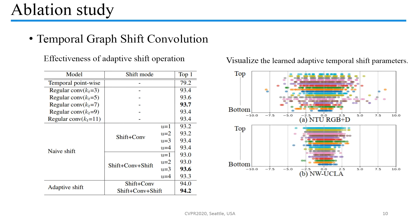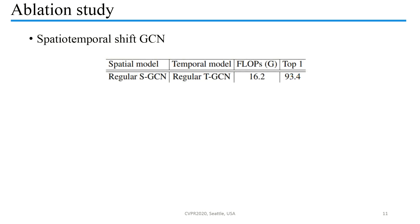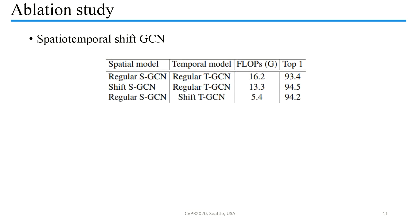The shift parameters trained on the NTU RGB+D dataset tend to be larger than those on the NW-UCLA dataset. This is reasonable because the average frame number of action samples in NTU RGB+D is about twice that of NW-UCLA. After the ablation study on spatial and temporal models, we conduct spatial-temporal shift graph convolution, further boosting performance and efficiency.